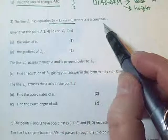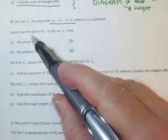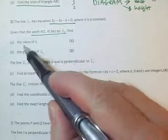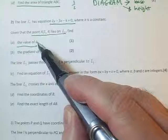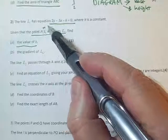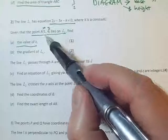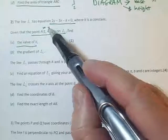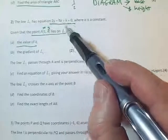K is a constant. This point lies on L and we've got to find the value of K. So when they give us a point, they're giving us an X and a Y.